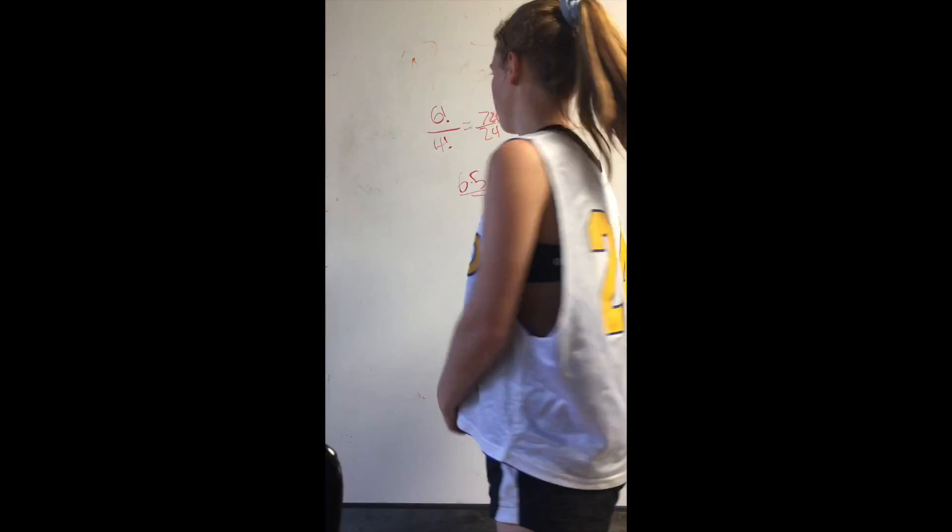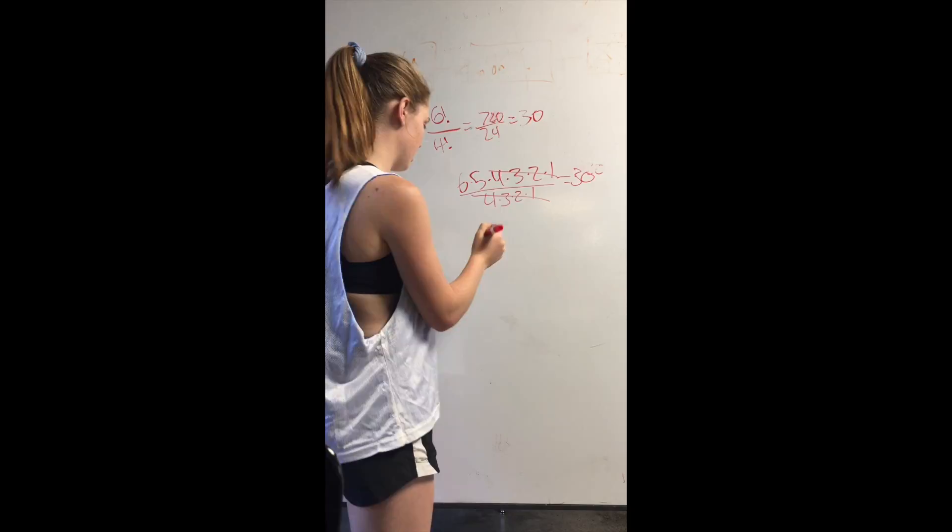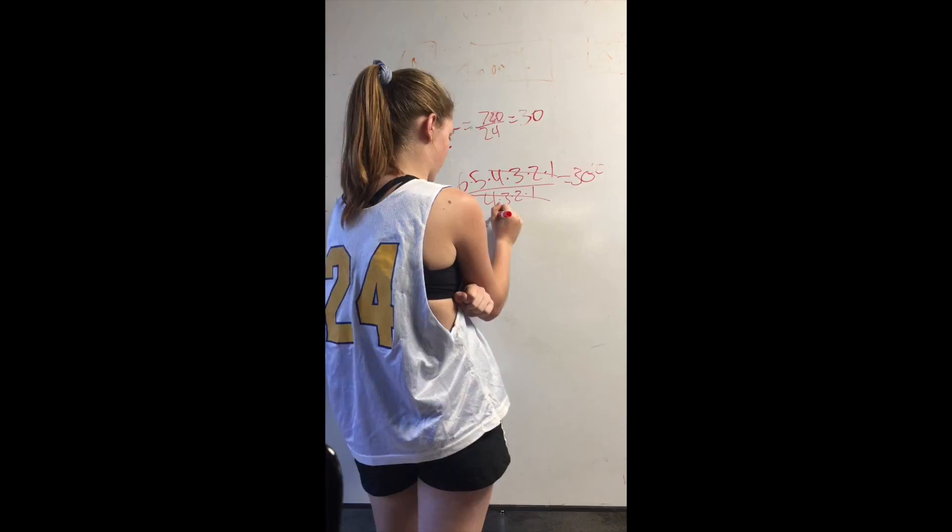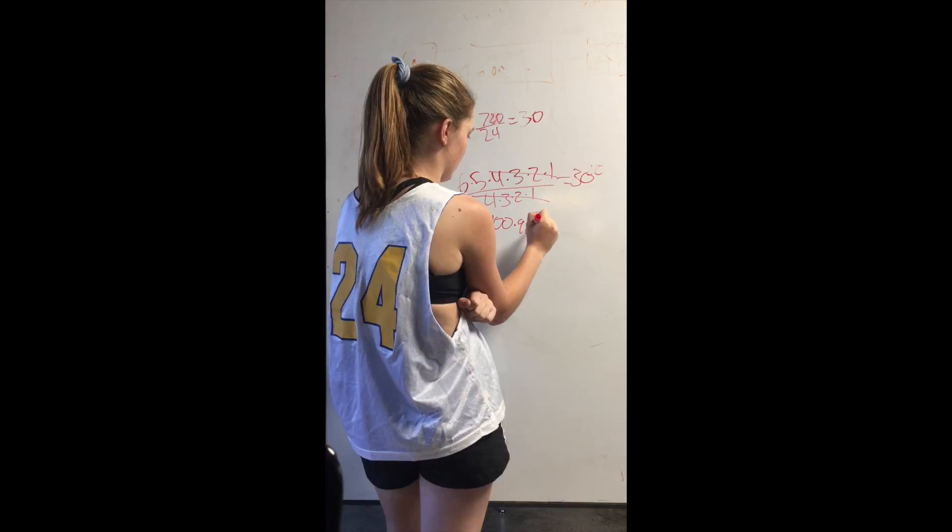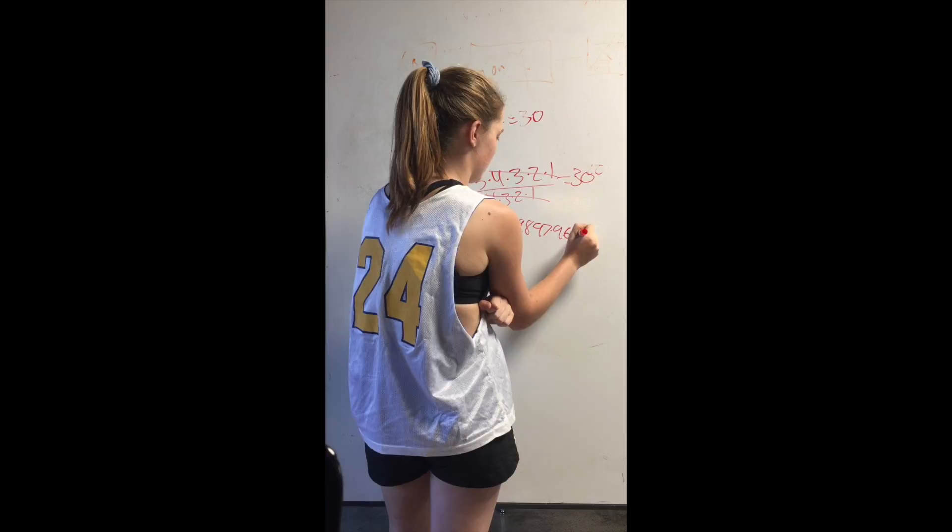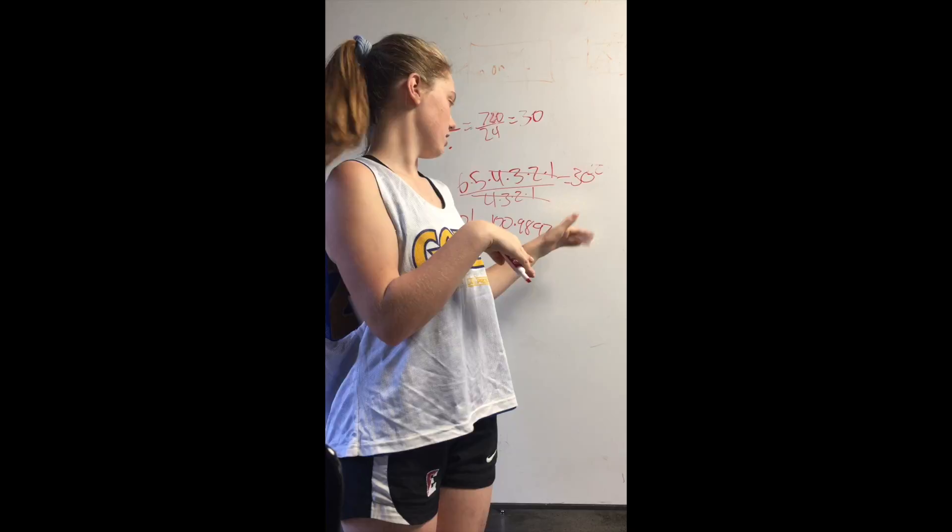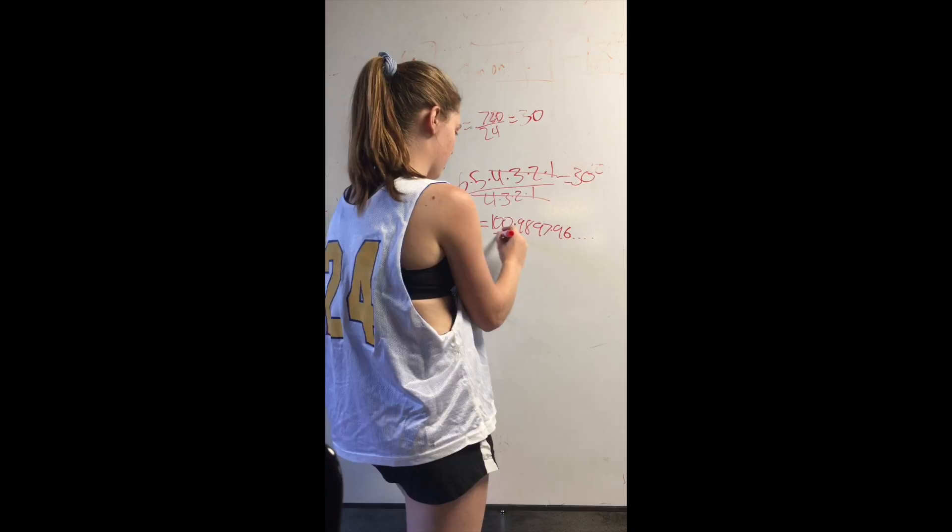We can also do it with harder problems, like if we did factorial 100 over factorial 95. We would have 100 times 99 times 98 times 97 times 96, and then that would trail off. The factorial 95 over factorial 95 would cancel out. So we would just have to do these times each other to get the answer.